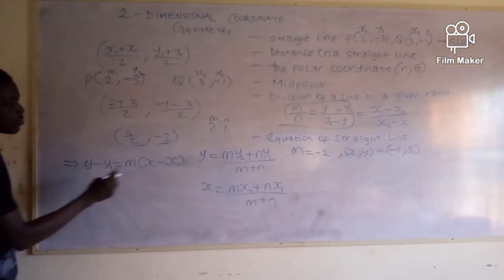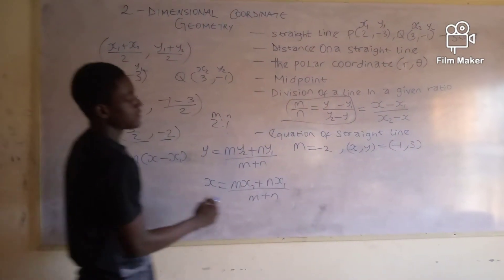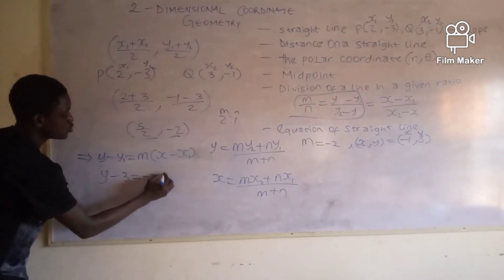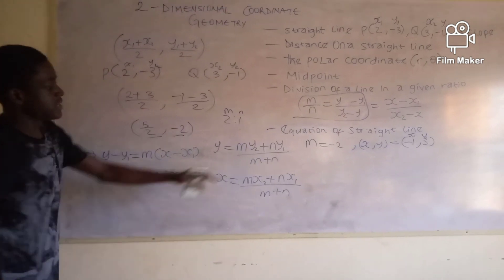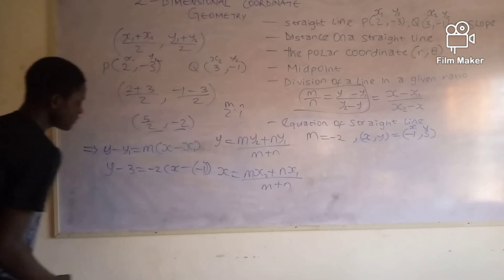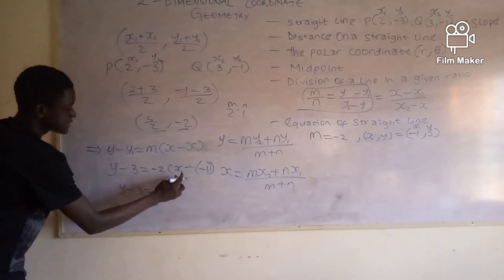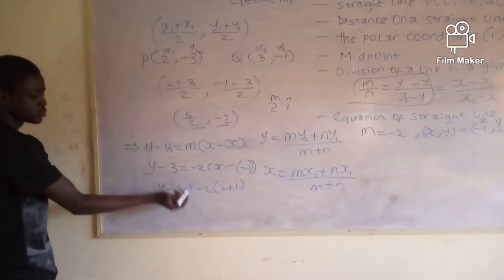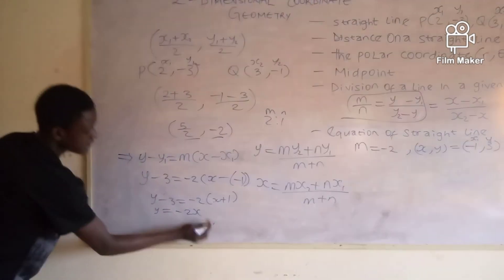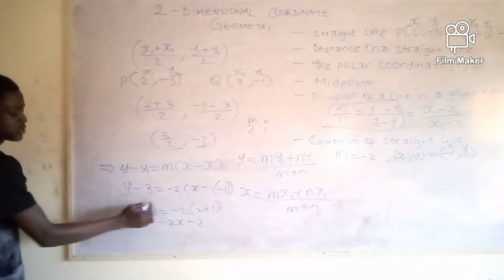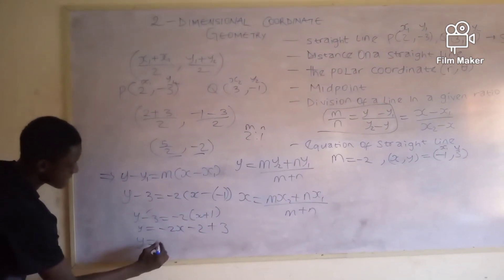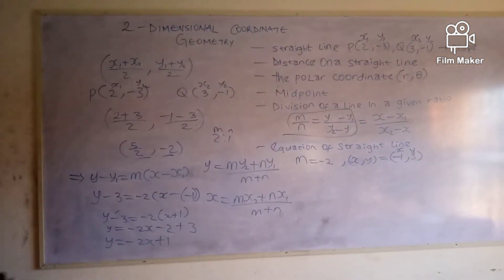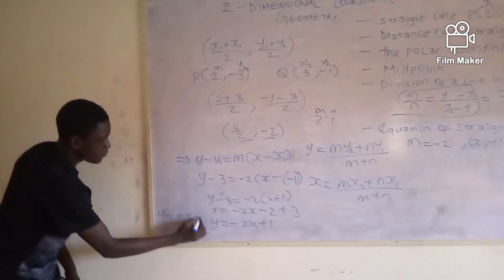Using this formula with gradient m = -2 and point (-1, 3): y - 3 = -2(x - (-1)), so y - 3 = -2(x + 1), giving y - 3 = -2x - 2. Adding 3 to both sides: y = -2x - 2 + 3 = -2x + 1. The equation of the straight line is y = -2x + 1, which is in the standard form y = mx + c.